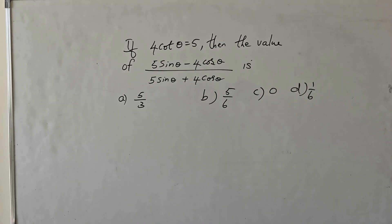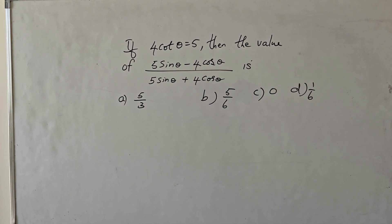If 4 cot θ is equal to 5, then find the value of (5 sin θ − 4 cos θ) divided by (5 sin θ + 4 cos θ). Four choices are given and we need to identify the correct choice.